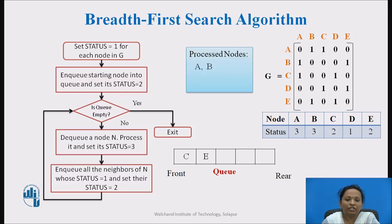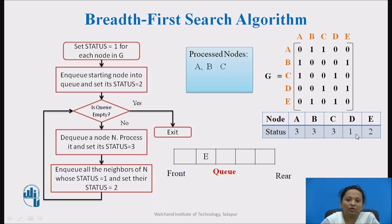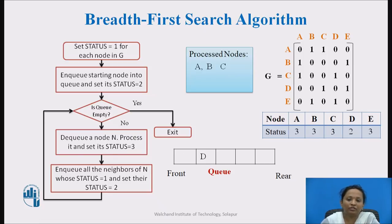Again we check: is the queue empty? No. The first node is now C. We dequeue C, mark it as processed, and update its status to 3. We check C's neighboring nodes with status 1 — that is D. D is enqueued into the queue and its status is updated to 2. Next, we check again: is the queue empty? No. We dequeue E, mark it as processed, status changed to 3. The neighboring nodes of E are B and D, but B's status is 3 and D's status is 2, so there are no further nodes to enqueue.